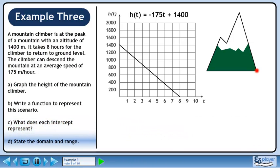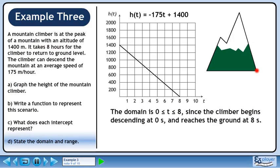In part D, we are asked to state the domain and range. The domain is between 0 and 8 seconds since the climber begins descending at 0 seconds and reaches the ground at 8 seconds.